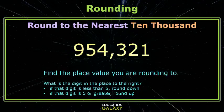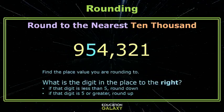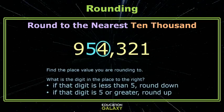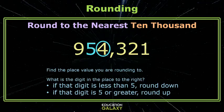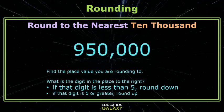Let's try another. Here we're going to round to the nearest ten thousand. Which digit's in the ten thousand's place? Five is correct. The digit to its right is the 4. Is that digit less than 5? It is, so we are going to round down — to the ten thousand below our number, or to the left of our number on a number line. So that's 950,000.